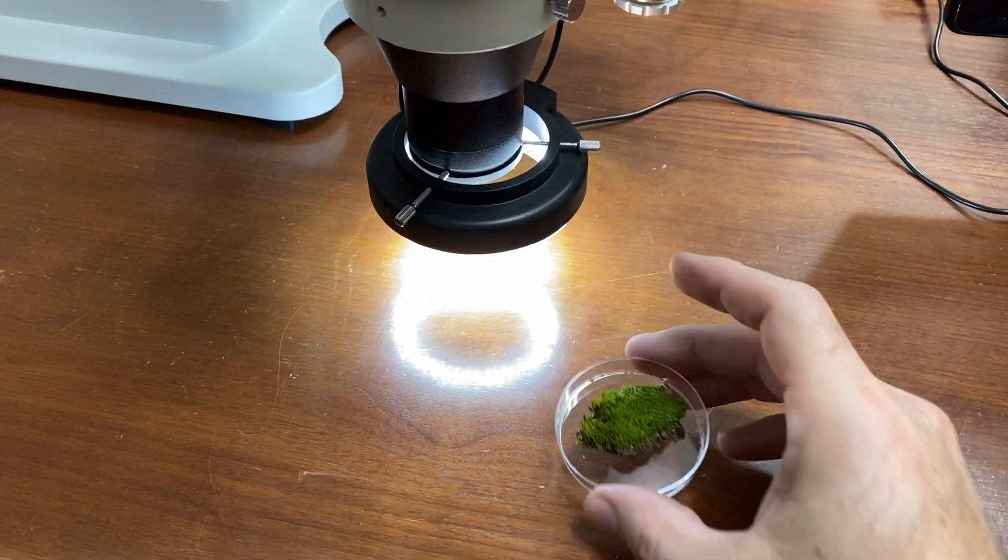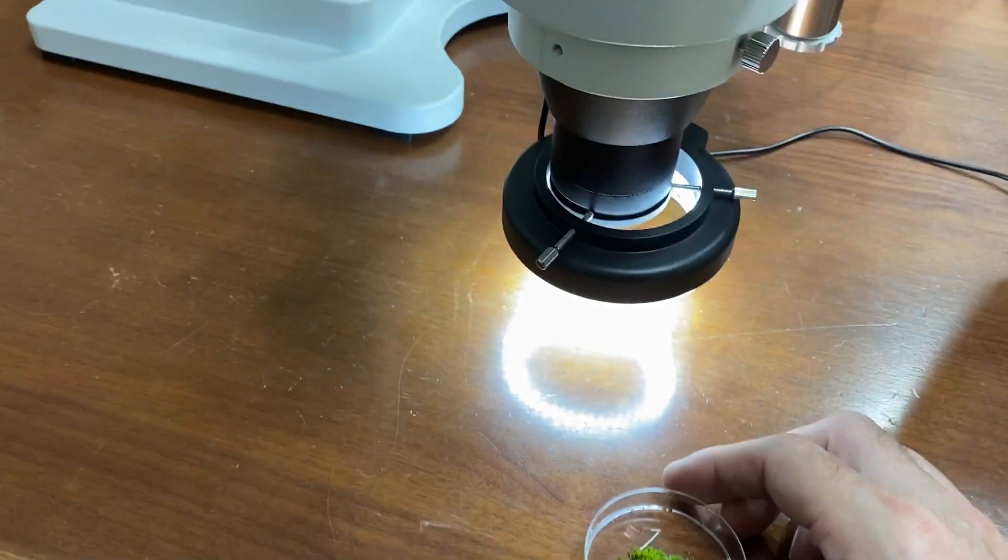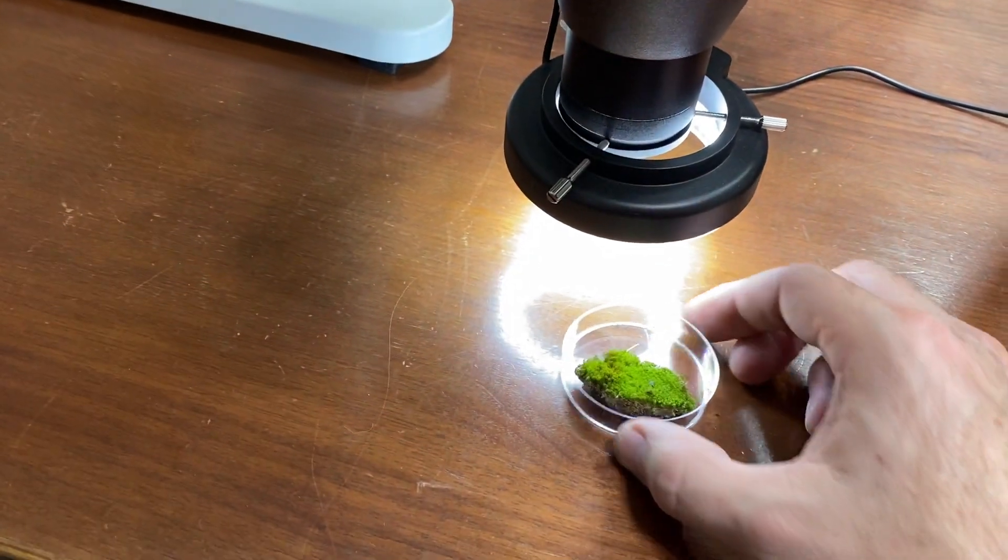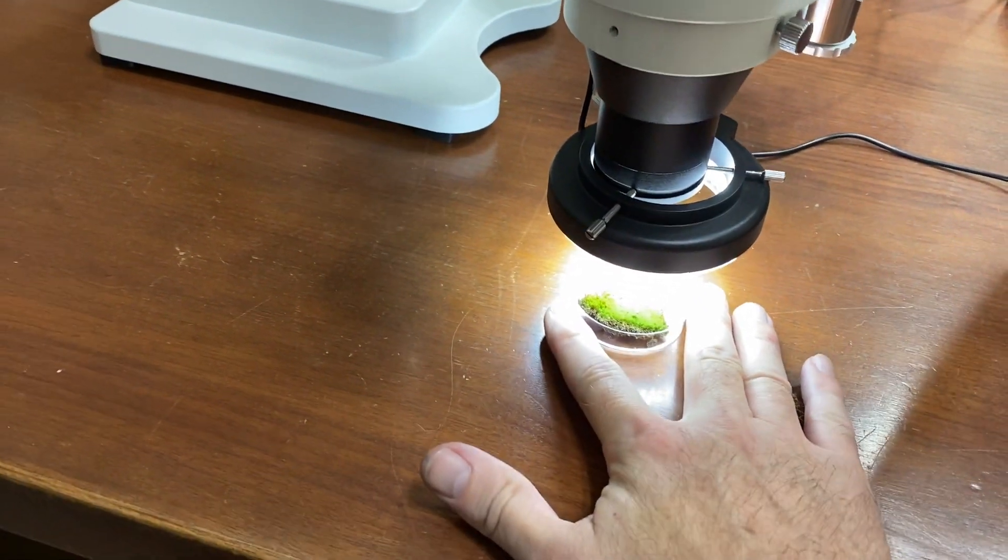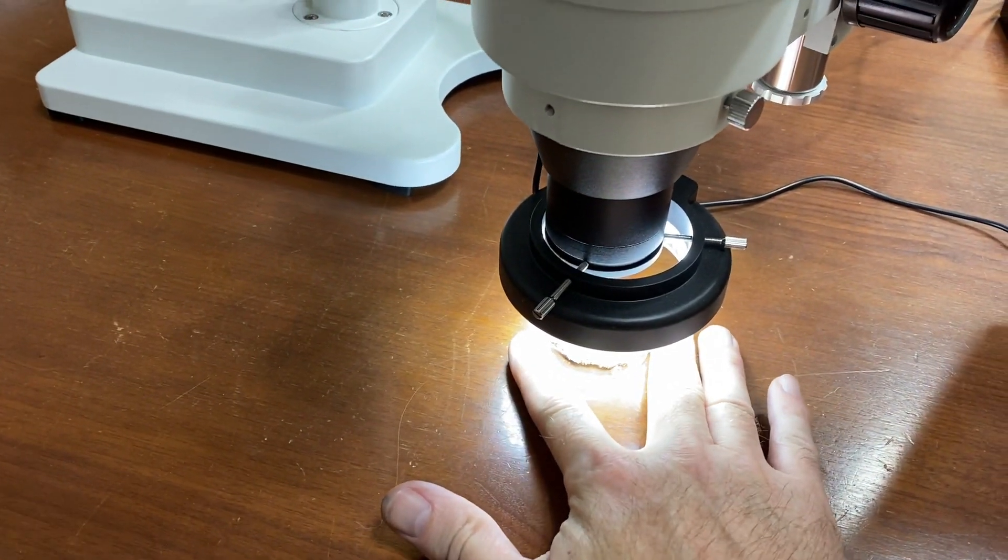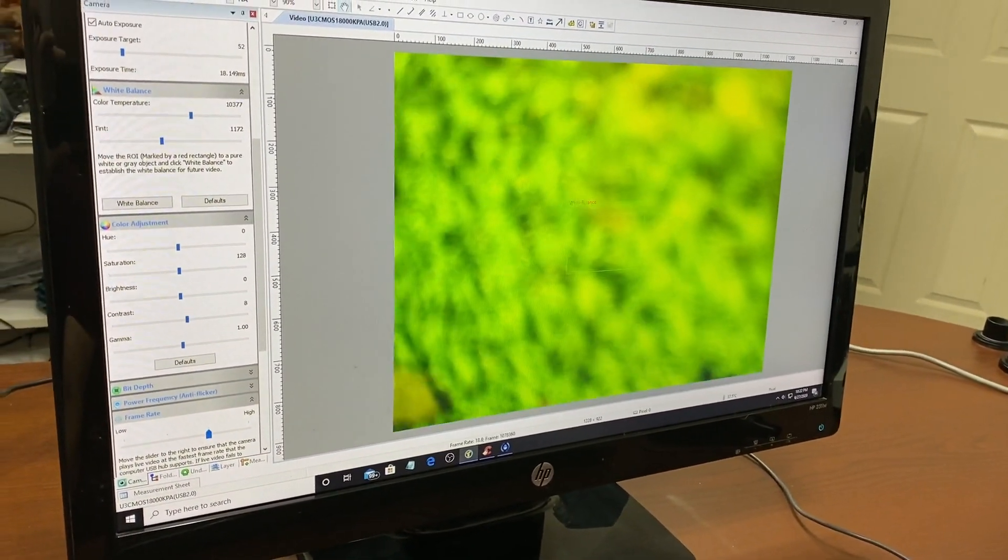Alright, so I'm going to put the moss under the stereo microscope here. This is an AM scope microscope. I'm just going to slide it right under there like so. And over here you can see that it shows up on the monitor.